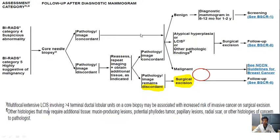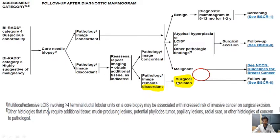If the core biopsy finding is benign, follow-up with diagnostic mammography can be done twice per year, followed by one to two yearly intervals. The respective guidelines for breast cancer are followed if the lesion is malignant. If the biopsy report is pathologically discordant, it is recommended to repeat the imaging or obtain additional tissue; if repeat pathology remains discordant, surgical excision is advised. If found malignant, the respective NCCN guidelines for breast cancer management are followed.